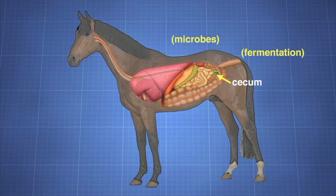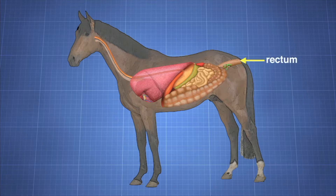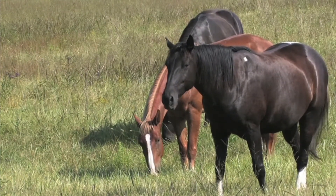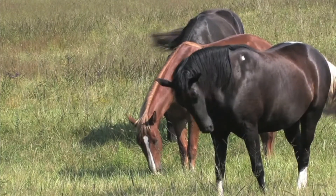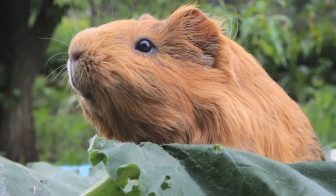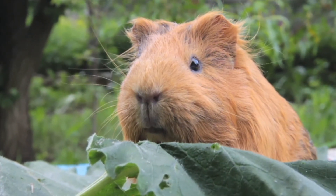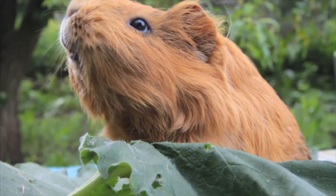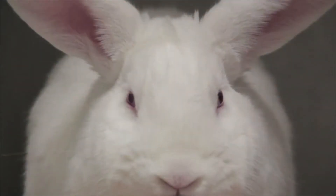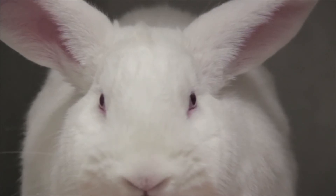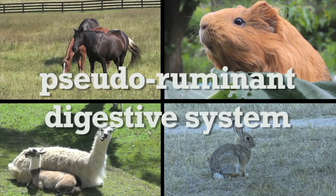The food particles then pass through the large colon. What cannot be digested is then released to the rectum and excreted. Many animals with pseudoruminant digestive systems eat some of their own feces, a process known as coprophagy. This is more commonly seen in rabbits and small pseudoruminants, because microbial action in the gut may produce lots of digestible nutrients that are not absorbed in the large intestine. By recycling their feces, these animals get a second opportunity to absorb these valuable nutrients.